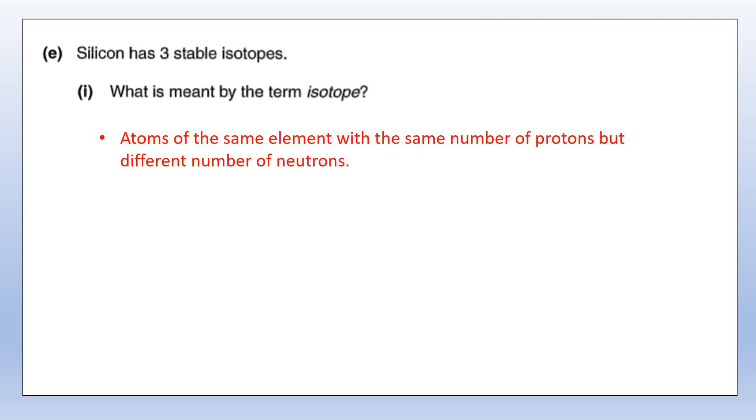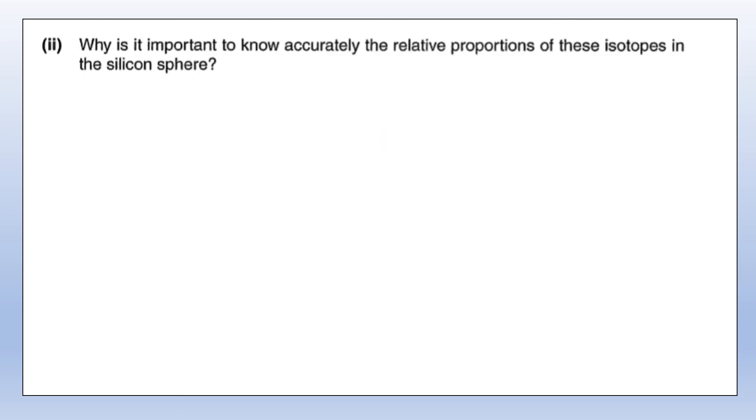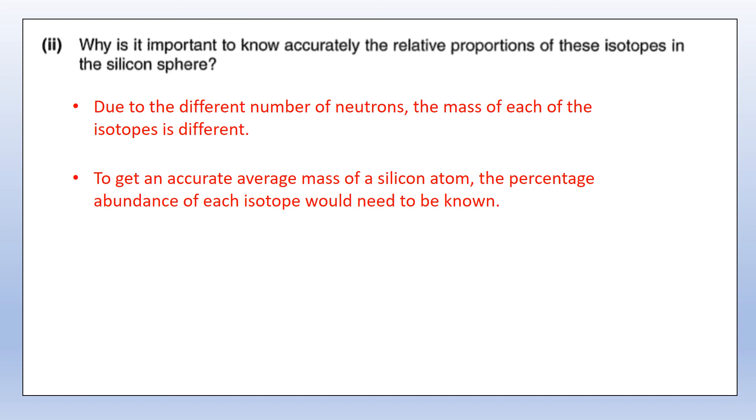Why would it be important to know the proportions of these isotopes in a silicon sphere? Well, different isotopes have different masses. If we just do our calculations assuming they all have the same mass, that's going to be a problem. What we need to do is know the percentage abundance of each isotope, and then we can get a very good idea of what the average mass of each of those isotopes is. But we can't do that unless we can factor that in.